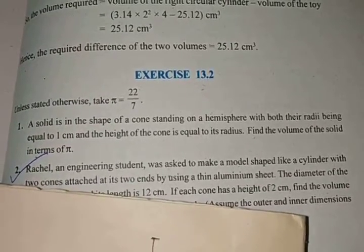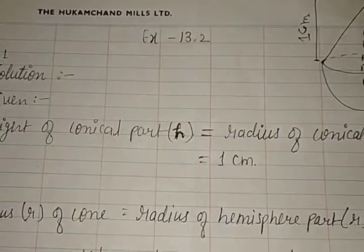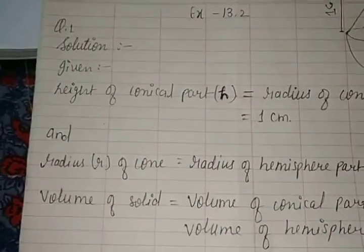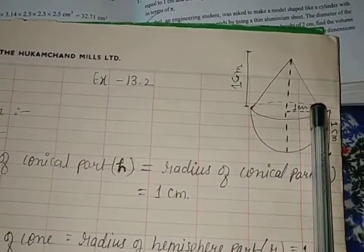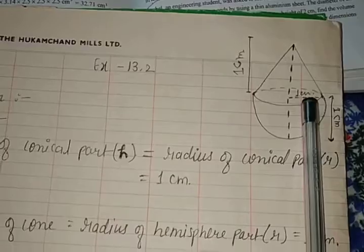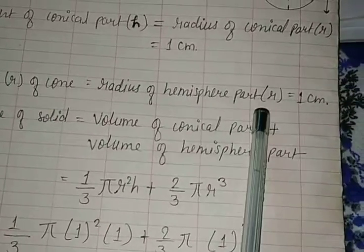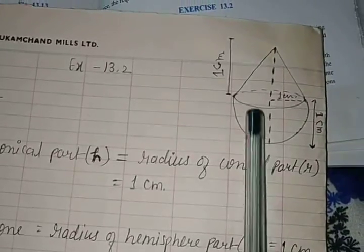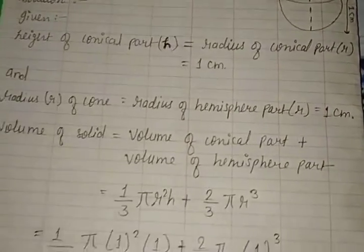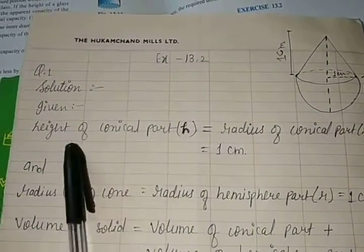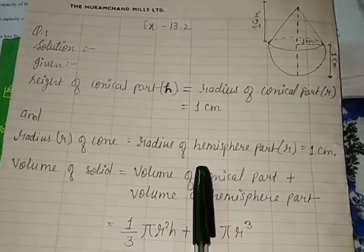So, writing down the given conditions: the radius of the cone and the radius of the hemisphere are equal. The radius of the cone is 1 cm and the radius of the hemisphere is 1 cm. Also, the height of the cone equals its radius, so the height of the cone is also 1 cm.